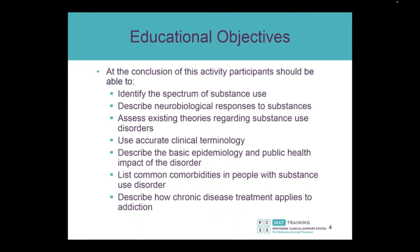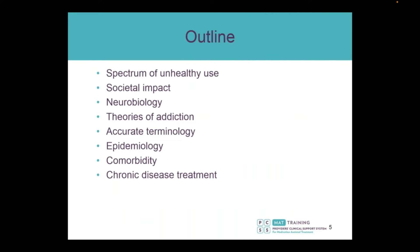The educational objectives are to identify the spectrum of substance use, describe neurobiological responses to substances, assess existing theories regarding substance use disorders, use accurate clinical terminology, describe the basic epidemiology and public health impact of the disorder, list common comorbidities in people with substance use disorder, and describe how chronic disease treatment applies to addiction. We'll cover those topics including the spectrum of unhealthy use, societal impact, neurobiology, theories of addiction, accurate terminology, epidemiology, comorbidity, and chronic disease treatment or integrated care.